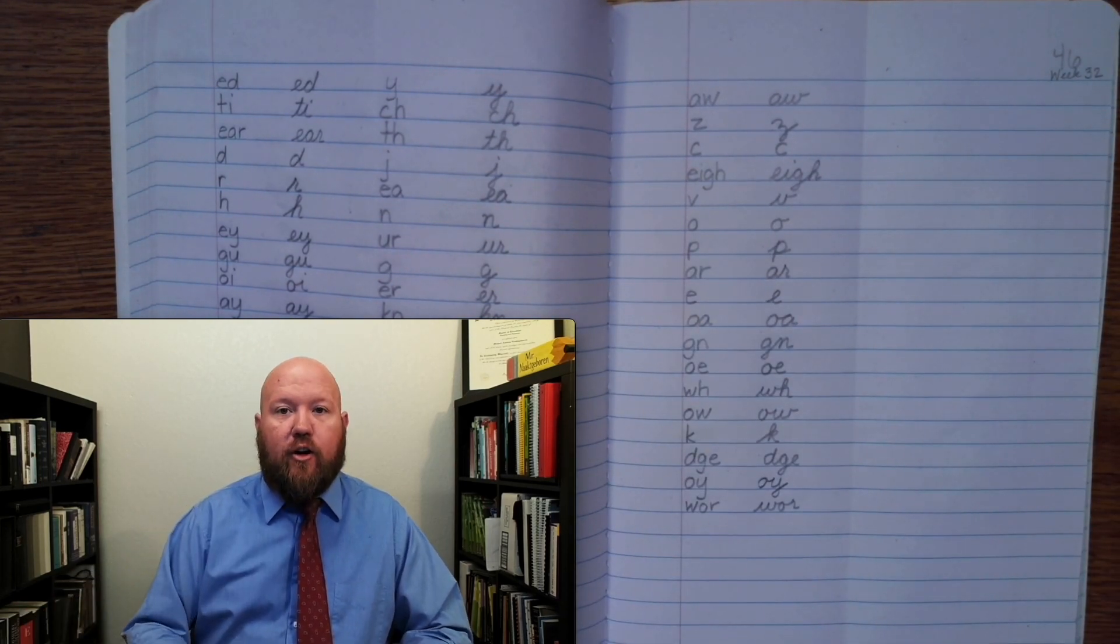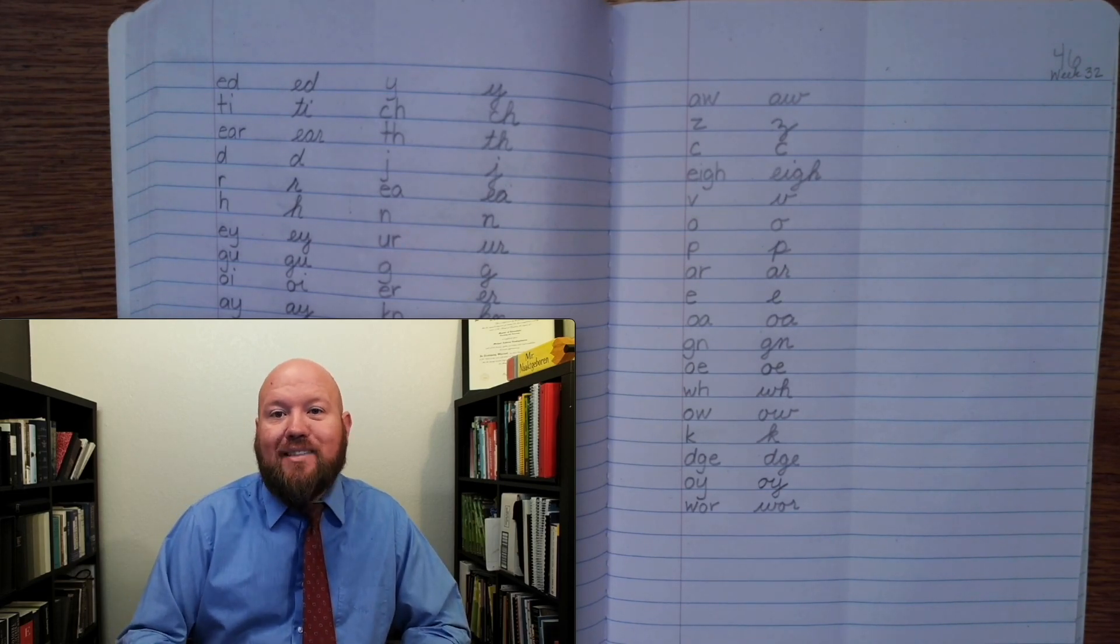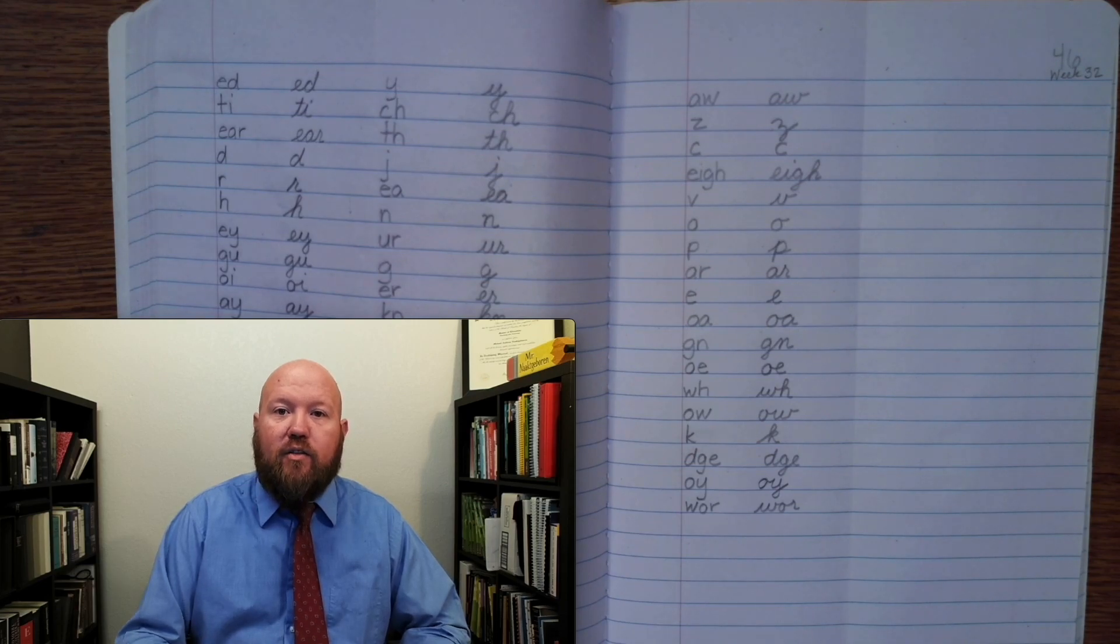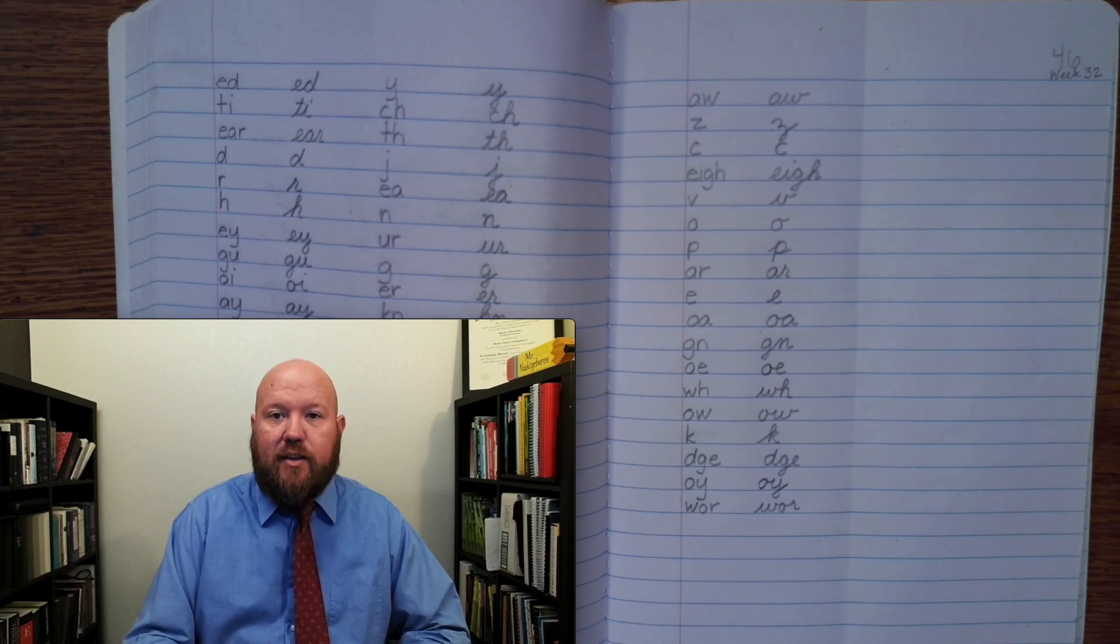Now it's time for our written phonogram review. For the written phonogram review, I will say the sound, followed by the Q if there is one. You should say the sound, followed by the Q if there is one, and write it at the same time. When you're writing, don't look at the screen to see the answer. Just write it on your own.